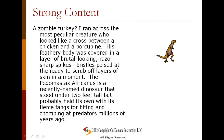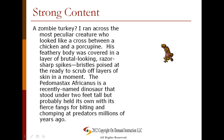Let's take a look at another example — a zombie turkey: 'I ran across the most peculiar creature who looks like a cross between a chicken and a porcupine. His feathery body was covered in a layer of brutal-looking, razor-sharp spikes, bristles poised at the ready to scrub off layers of skin in a moment. The Pedomastix africanus is a recently named dinosaur that stood under two feet tall, but probably held its own with its fierce fangs for biting and chomping at predators millions of years ago.' This is an expository informational piece that gives the reader a nice thorough description, great details, and strong imagery.